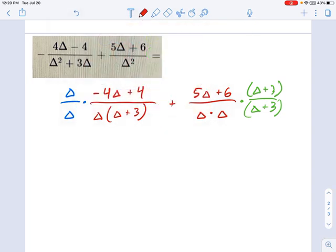Let's multiply those through and see what we get. I have negative 4 delta squared plus 4 delta on the left. And on the right, I have, let's see, that's a 5 delta squared plus 5 delta.